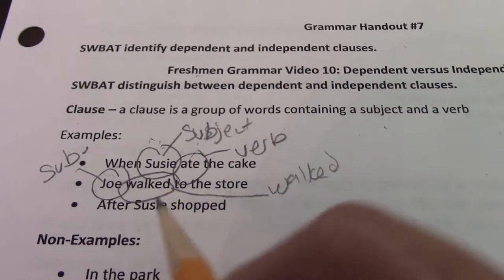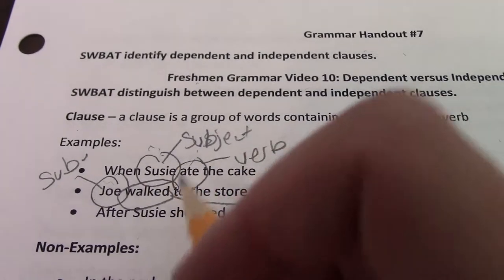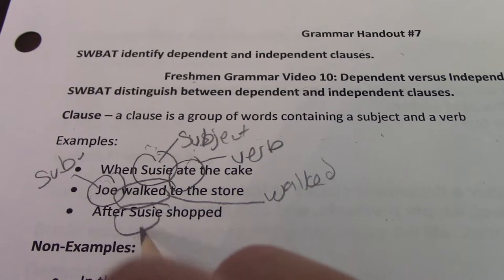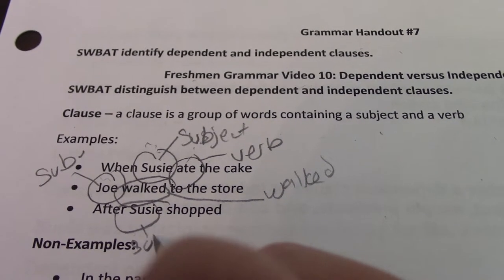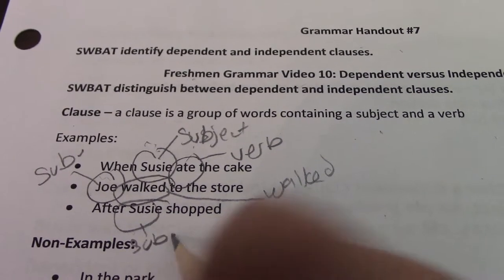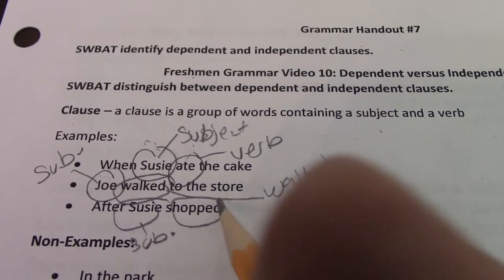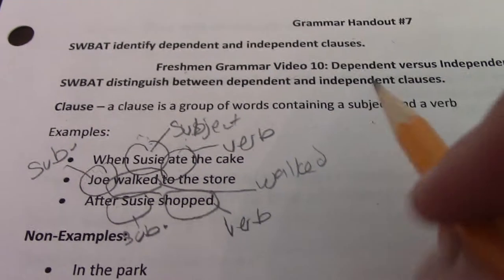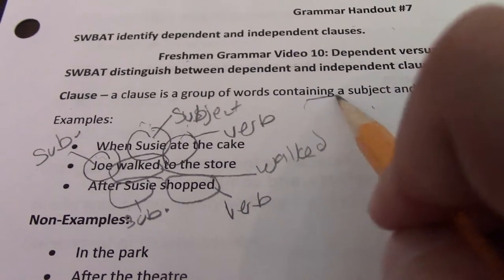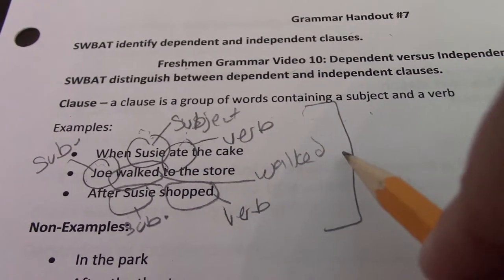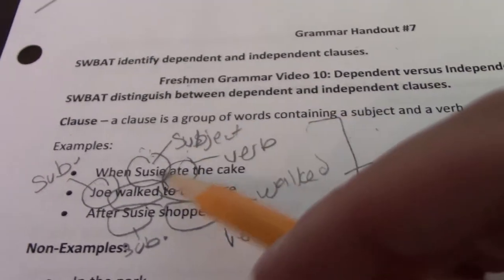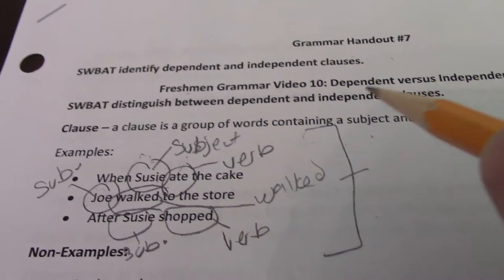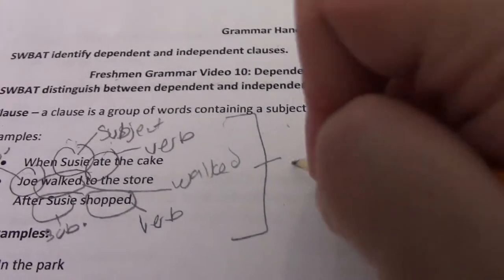Let's look at the next sample: 'After Susie shopped.' Again, I have a subject, Susie, and then I have shopped, which is a verb. So all of these are clauses because they all have a subject and a verb.